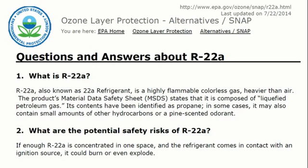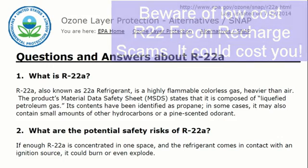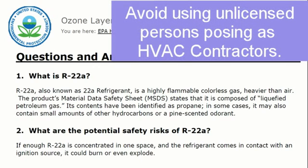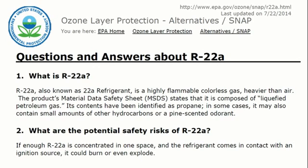Questions and answers about R22a. R22a is a highly flammable, colorless gas, heavier than air. The product's material data safety sheet states it is composed of liquefied petroleum gas; its contents have been identified as propane. In some cases it may also contain small amounts of other hydrocarbons or a pine-scented odorant. If enough R22a is concentrated in one space and comes in contact with an ignition source, it could burn or even explode. This R22a has been passed off as a do-it-yourself refrigerant, but there is no silver bullet here.